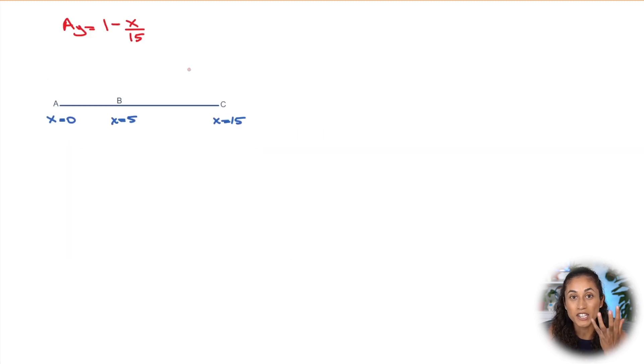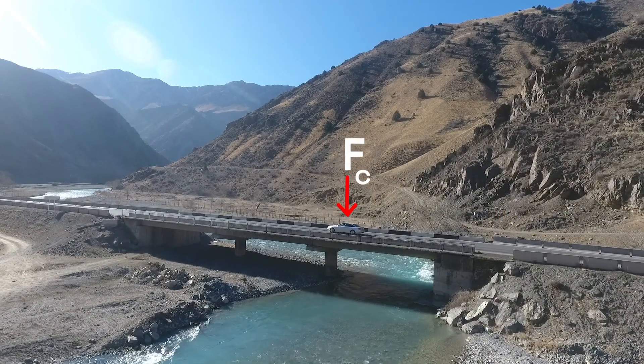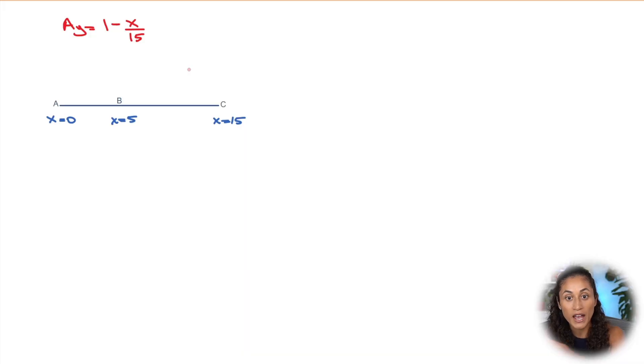So this is AY in terms of X. Now, the last thing we need to do here is plug in the distance here. So that way we can find the influence line. Because remember guys, we're trying to find the response or the influence line at A as the unit load moving along the beam, right? And to do that, we have to plug in the distance here.